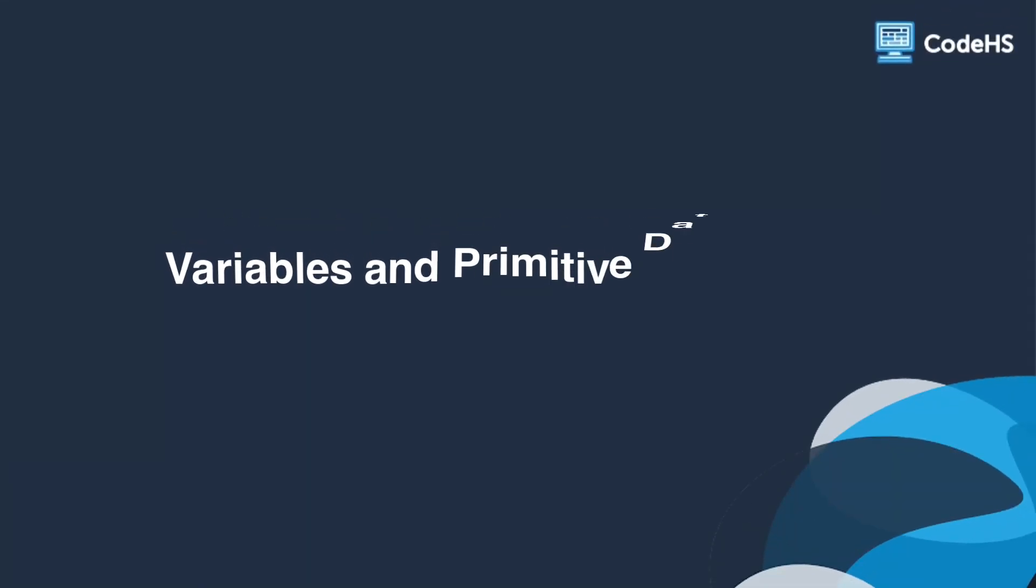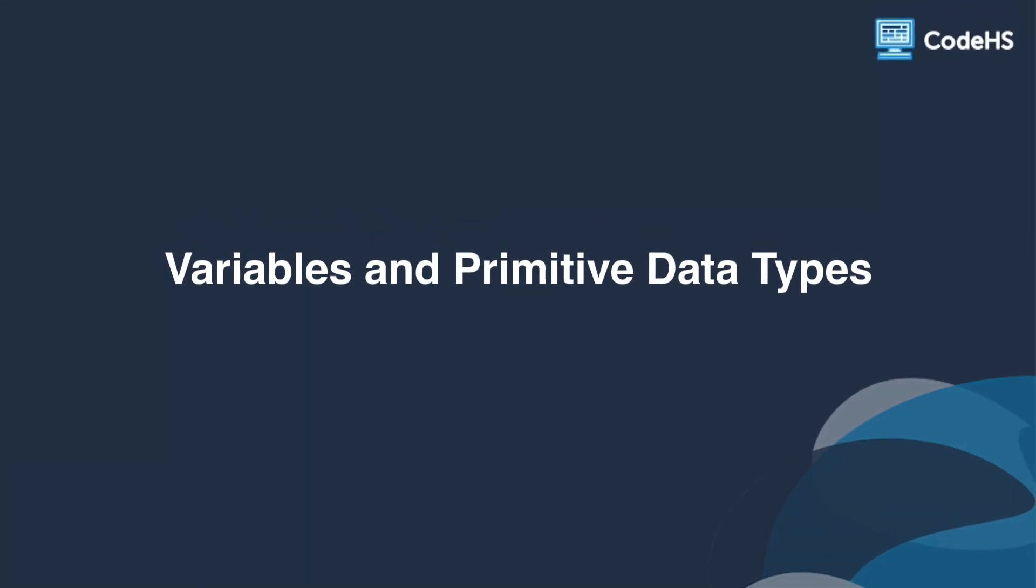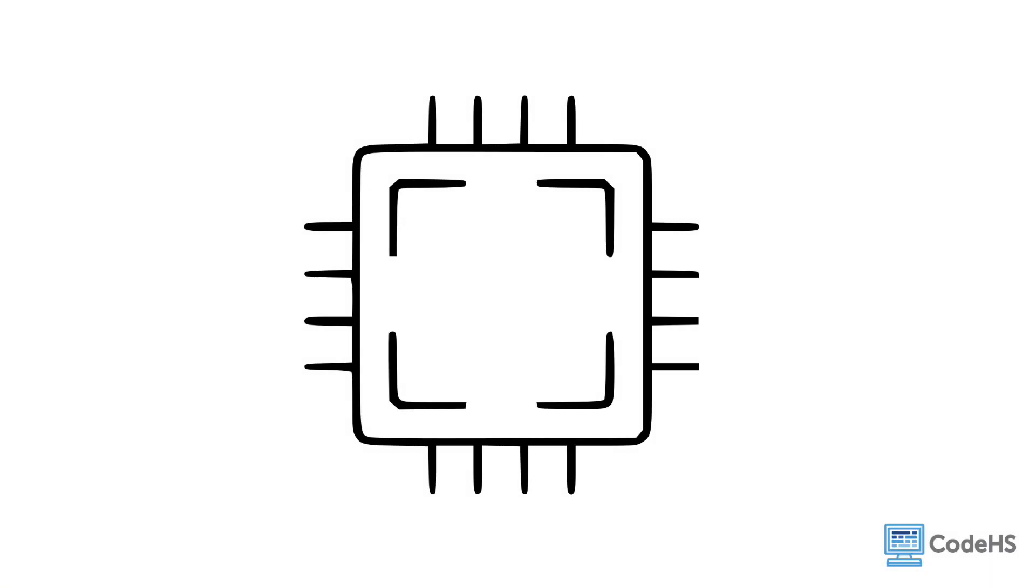Hi! In this video we'll learn about variables and primitive data types. Computer memory can store pieces of information that can be changed or updated throughout a program. One way that programmers are able to store information in a computer's memory is by using variables.